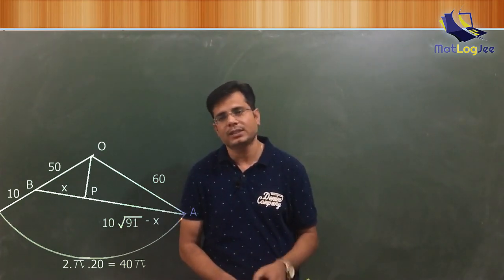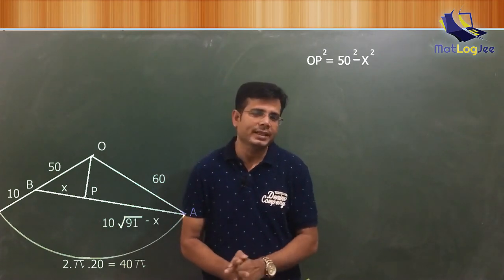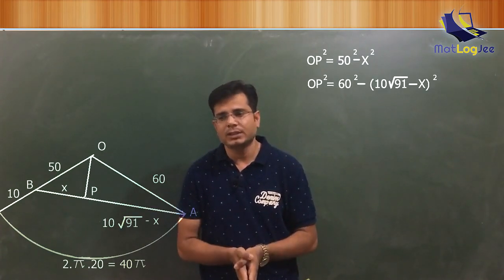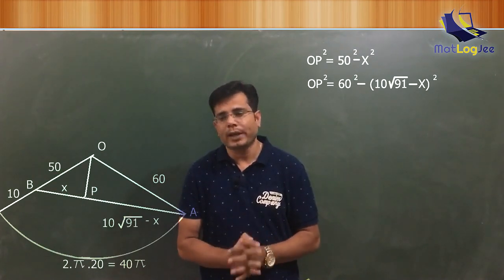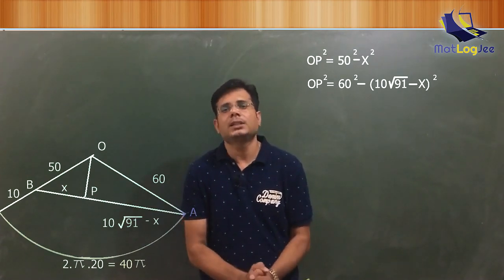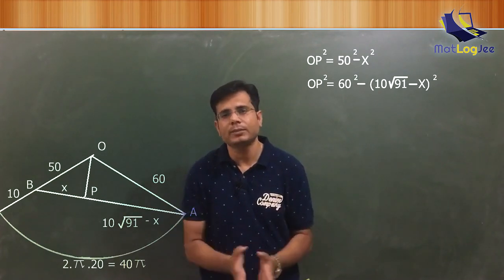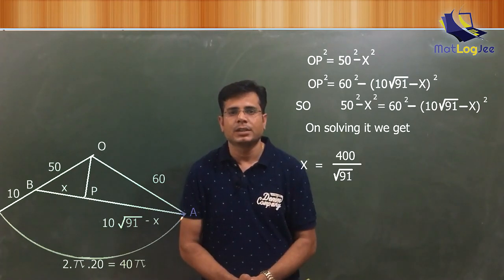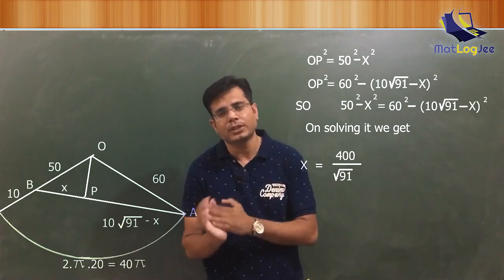In first triangle, we will get this side length is equal to √(50² - X²). In the second triangle, we will get the length of this side is √(60² - (10√91 - X)²). Now both these values represent the same length. So let me equate them to each other. And now solve this to find the value of X. So finally, hence we get the value of X, which is 400 divided by √91.